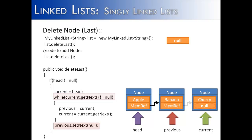We then call previous.setNext and set it to null. That, in effect, removes the last node from the linked list. The linked list now only has the first two nodes in it, and cherry is removed.